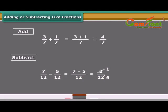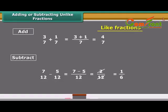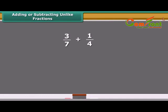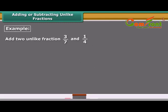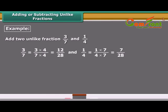We have learned to add and subtract like fractions. It is also not very difficult to add unlike fractions that do not have the same denominator. When we have to add or subtract these fractions, we first find equivalent fractions with the same denominator and then proceed. For example, 3 upon 7 and 1 upon 4 are two unlike fractions. To add them, we first find their equivalent fractions with the same denominator, which are 12 upon 28 and 7 upon 28.